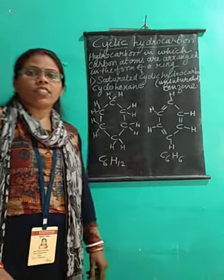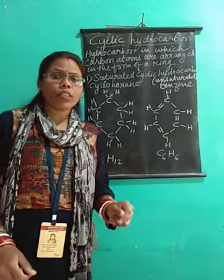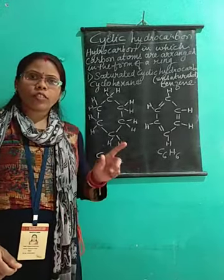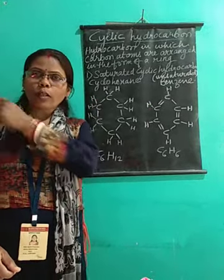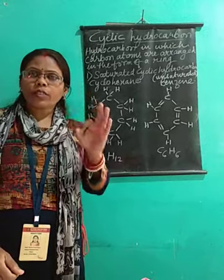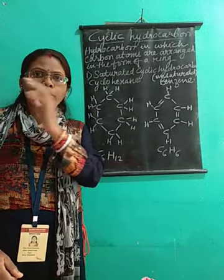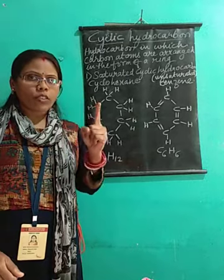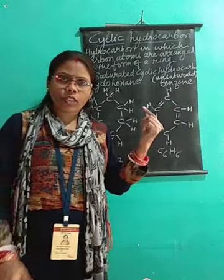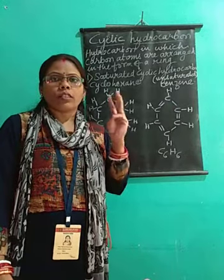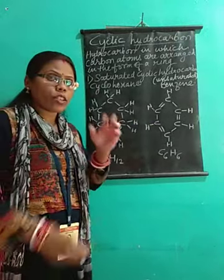Good morning children. Today we will start the new topic: cyclic hydrocarbons. Before this, I had told you that carbon atom combines with carbon atom itself to form a long chain. Three different types of chains can be formed: the first is straight chain, which you have studied in alkane and alkene. The second is branched chain. The third one is cyclic chain, which is a closed chain.